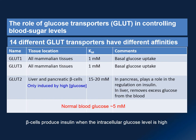There are many types of glucose transporters — so far we have found 14 glucose transporters in the human genome — and each of them has a different glucose binding affinity, represented by different values of their Km. Most cells in your body utilize glucose transporter number 1 and number 3, which have a very low Km of 1 millimolar.